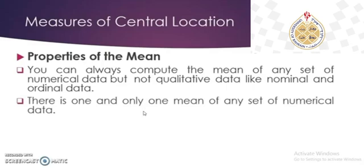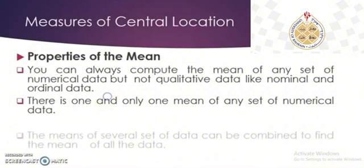The second property of the mean is that there is one and only one mean for any set of numerical data. This is called the uniqueness of the mean, because there will always be exactly one average or mean of any set of data — it cannot be two, three, and so on.